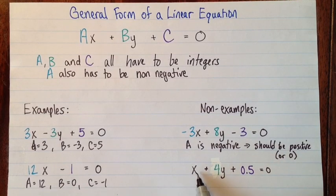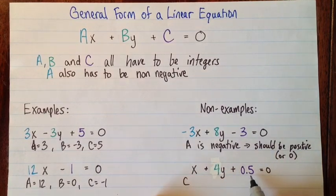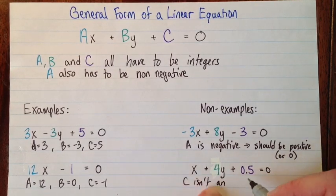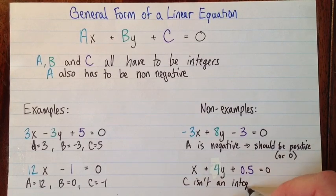Here's another example: x + 4y + 0.5 = 0. So our A value is one, because we have one x, so that's okay. B value is four, and the problem is C. The problem is that C is not an integer, but it should be.